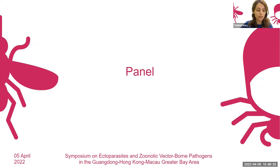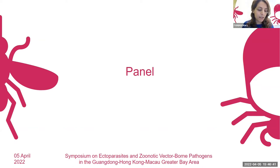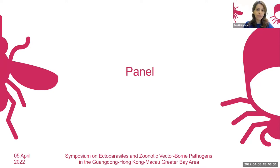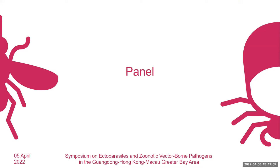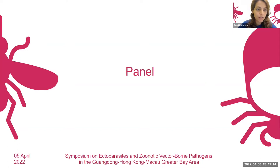We want to start with the first question in the chat group. The first question from Muhammad Umar-Aziz is: why are IFA or ELISA not a preferred test for the diagnosis of Ehrlichia?